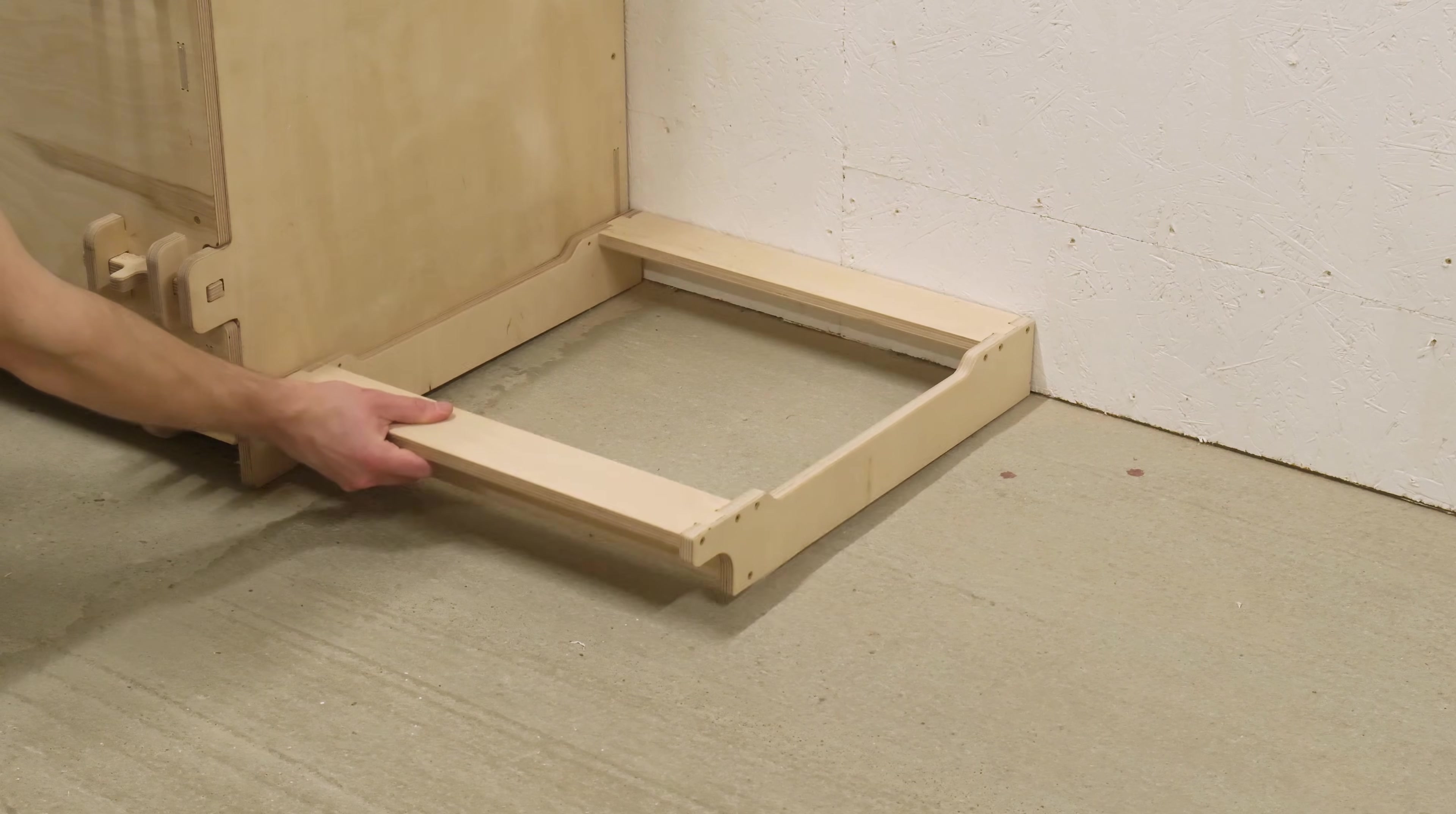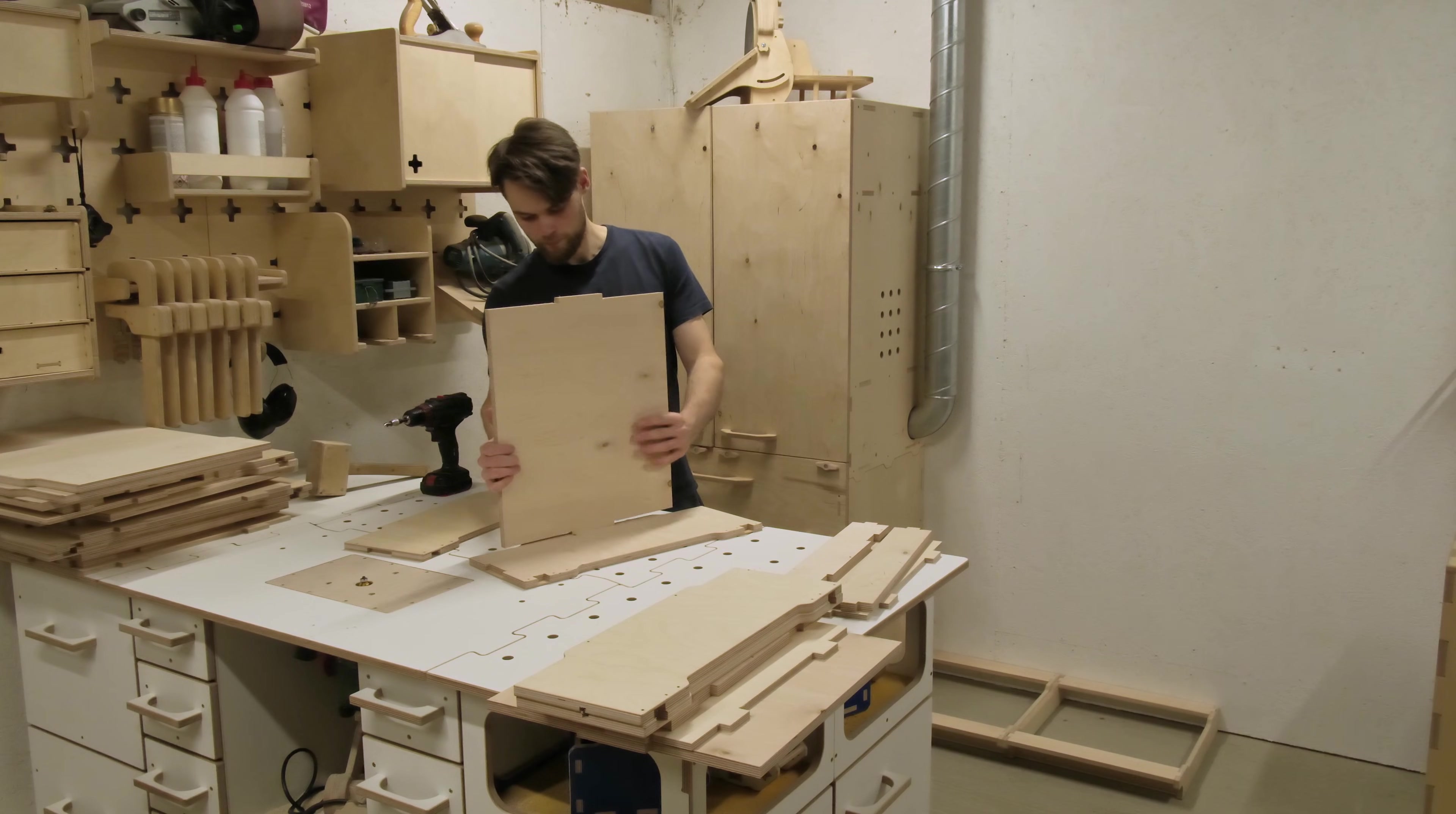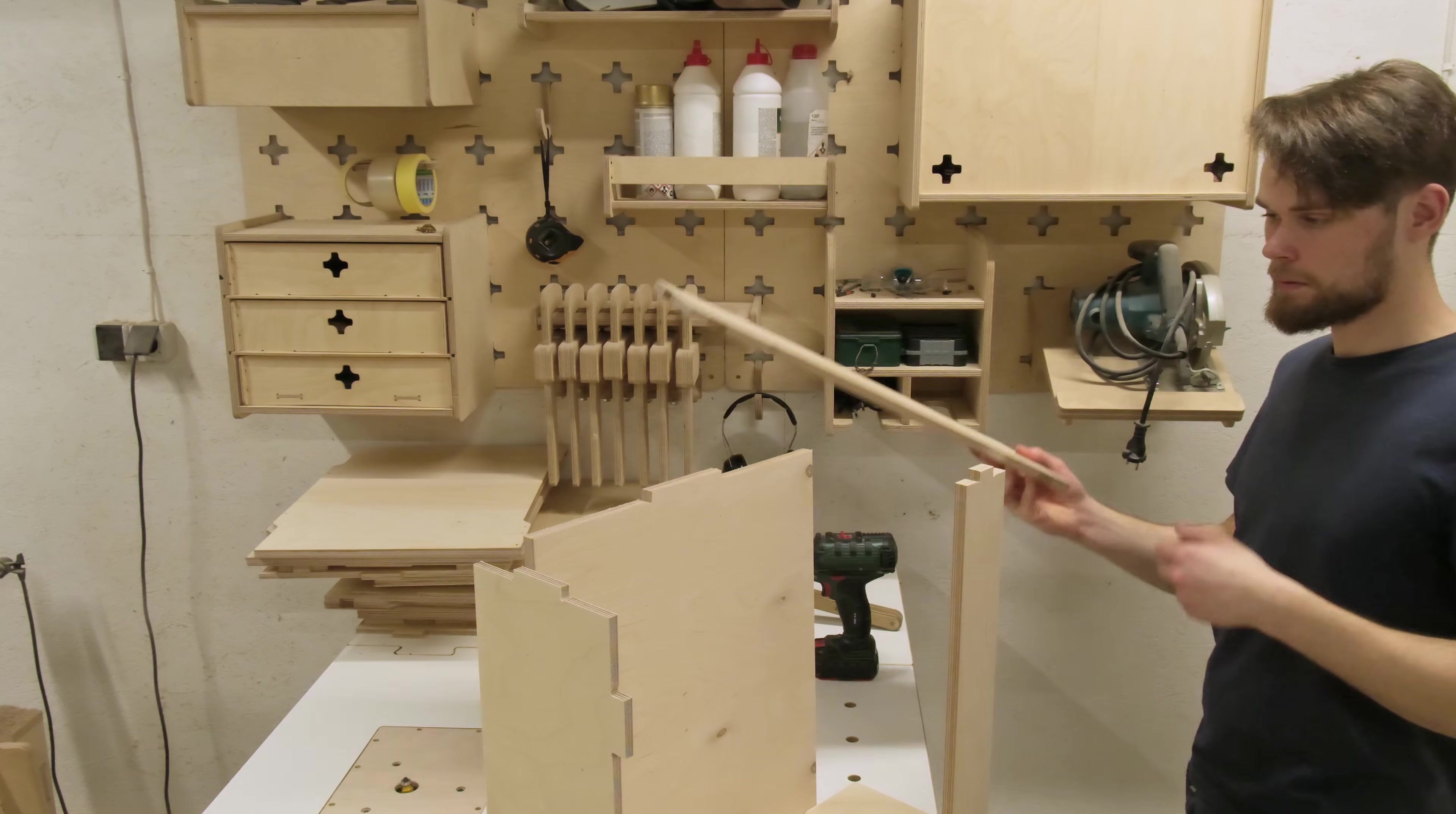With the bases made, we can position them where the cabinets will go. Now we can start assembling the smallest modules. The floor panel slips neatly between the side panels, and the soft tops are added, followed by the back panel.